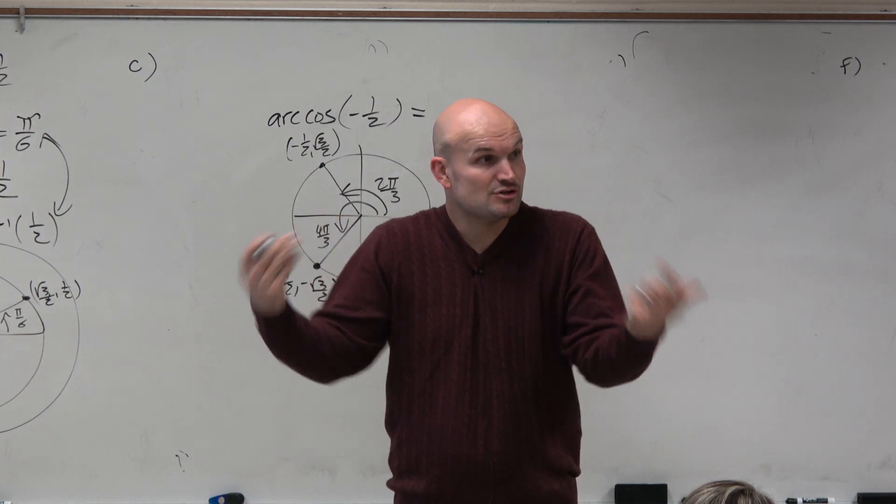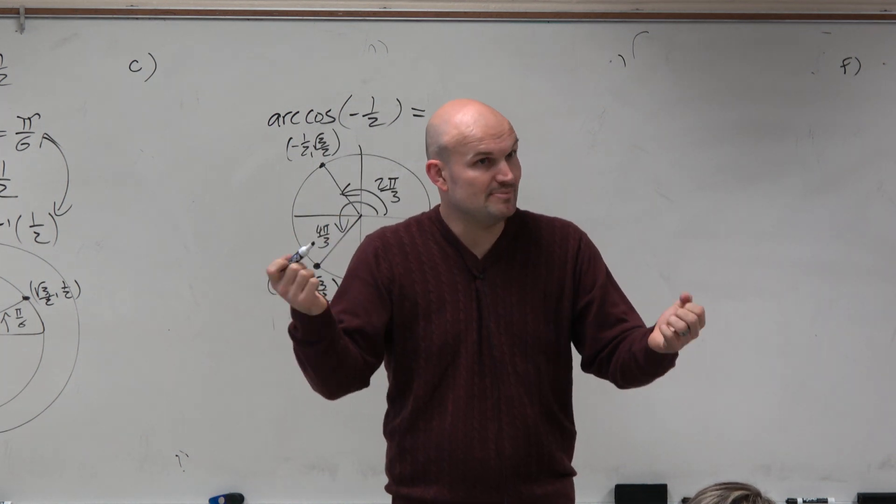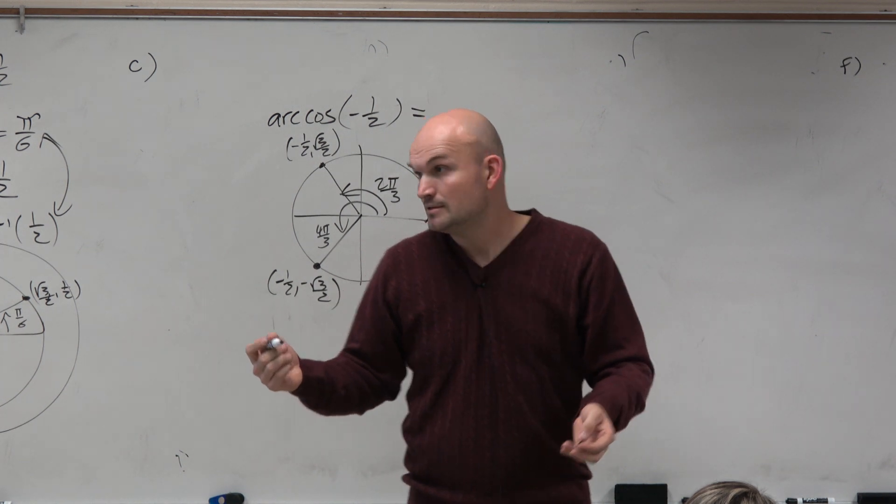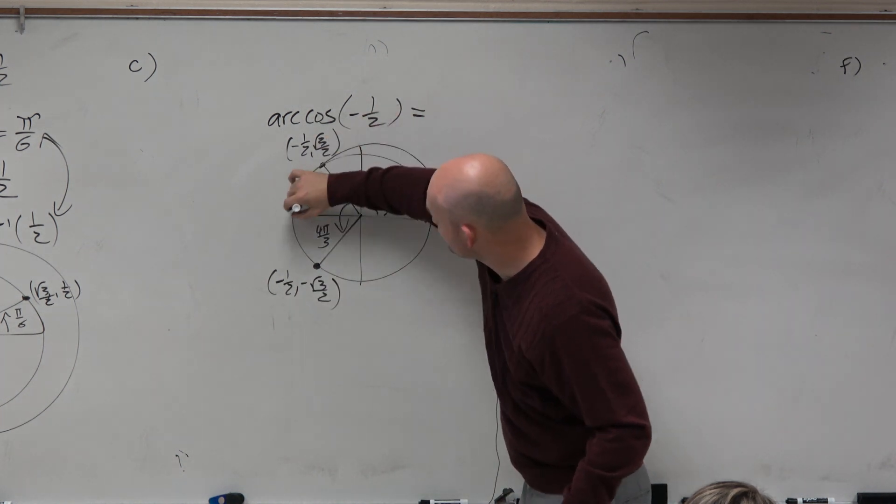But remember, cosine has restrictions, right? And it's restricted between 0 to pi. So what is the only angle that's between 0 and pi?